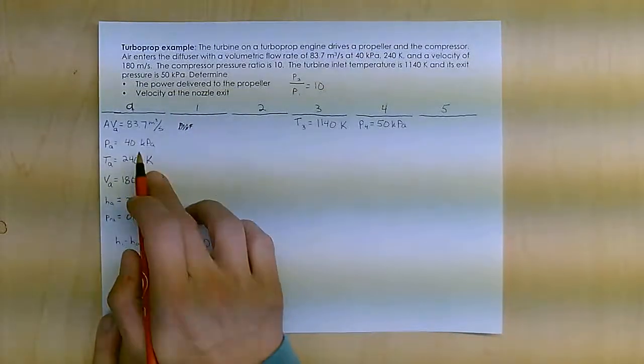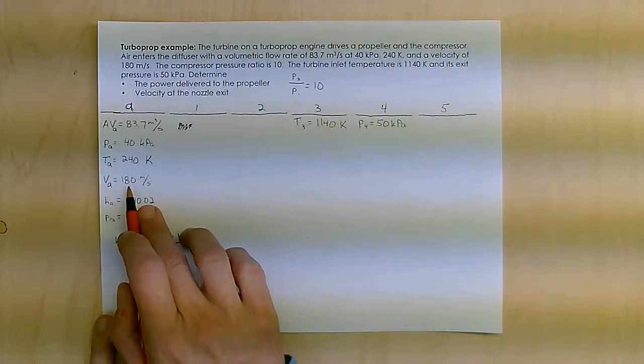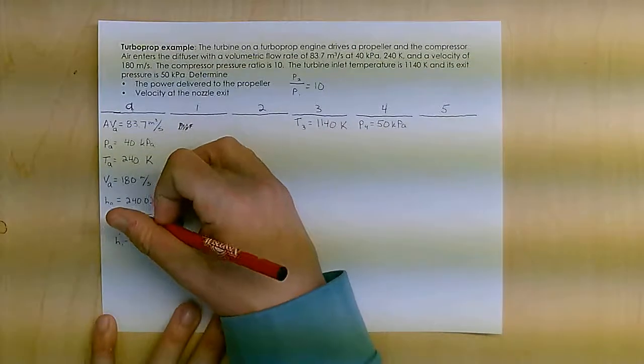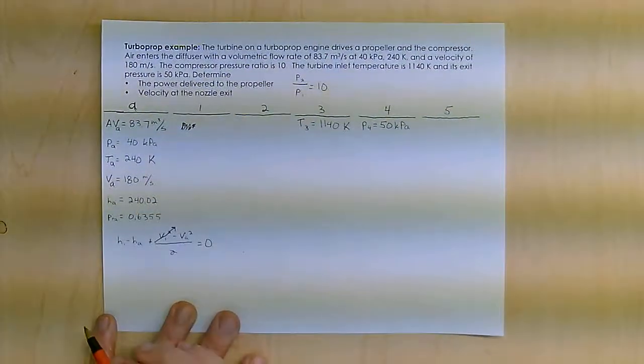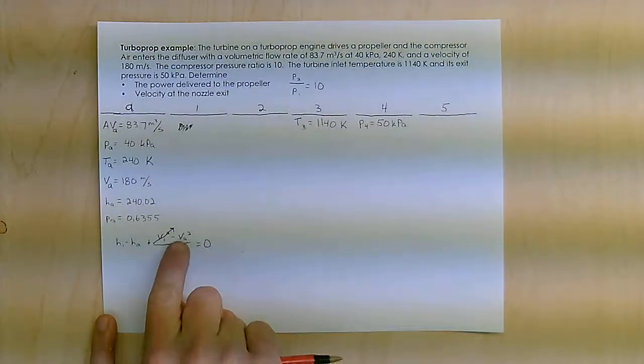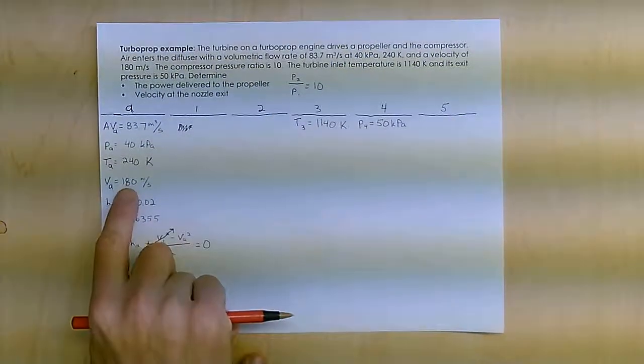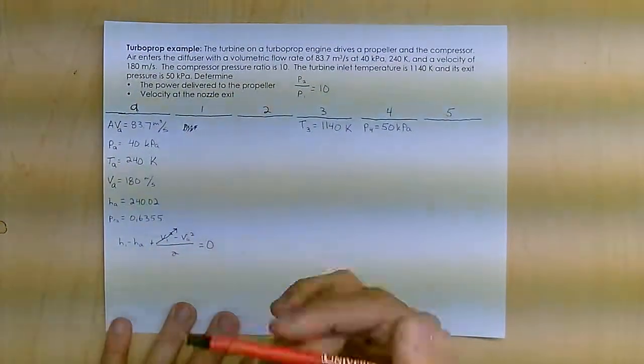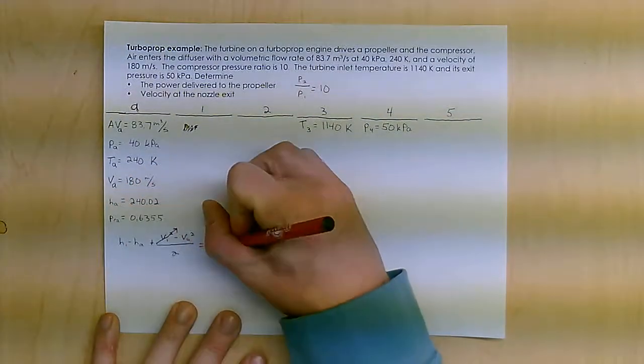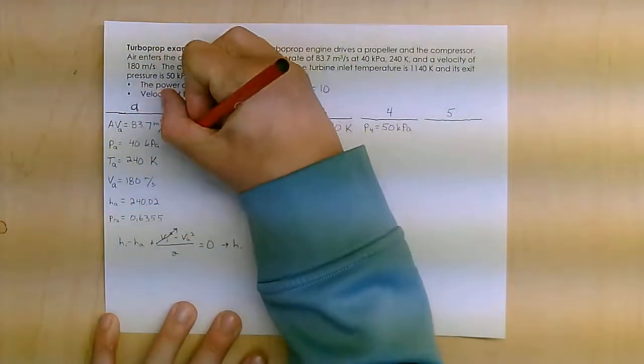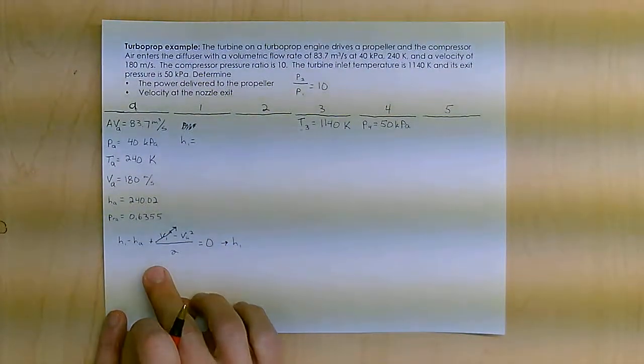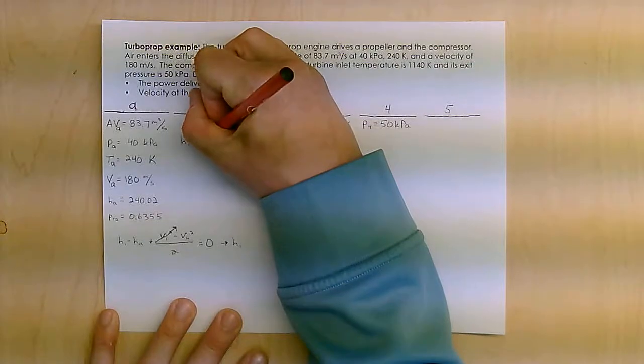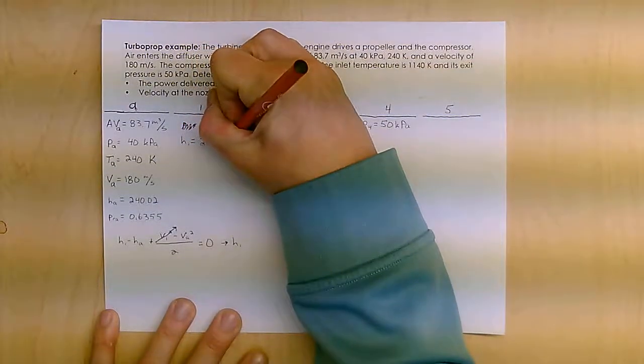In this situation, it slows down from a pretty high velocity of 180 meters per second to essentially a velocity of 0, or a negligible amount compared to that 180 meters. I know VA and I know HA, the only thing I don't know here is H1. So from that equation, from my first law equation, I can determine what H1 is, which is 256.22.